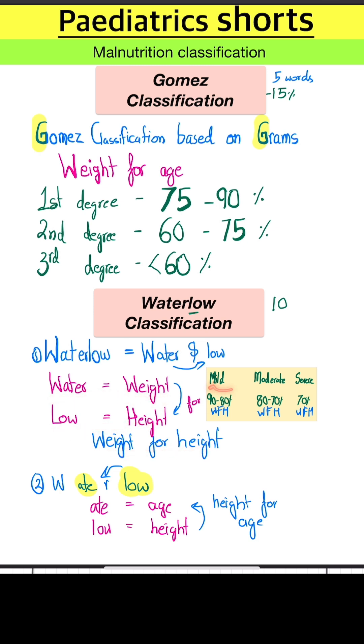So we have mild, that is 90 to 80%; moderate, that is 80 to 70%; and severe, that is less than 70% weight for height.